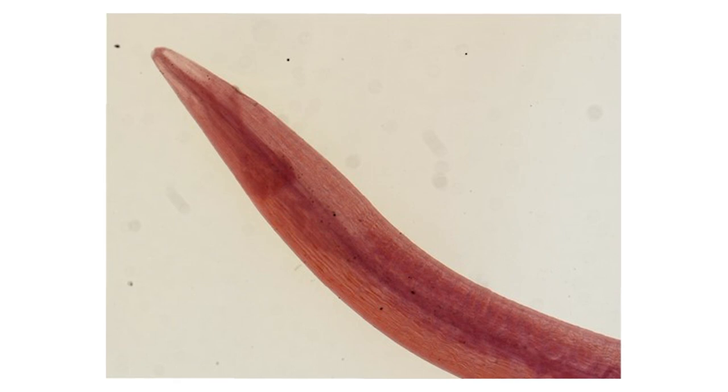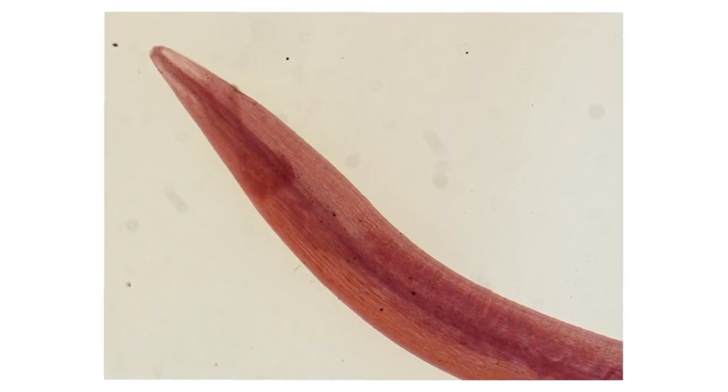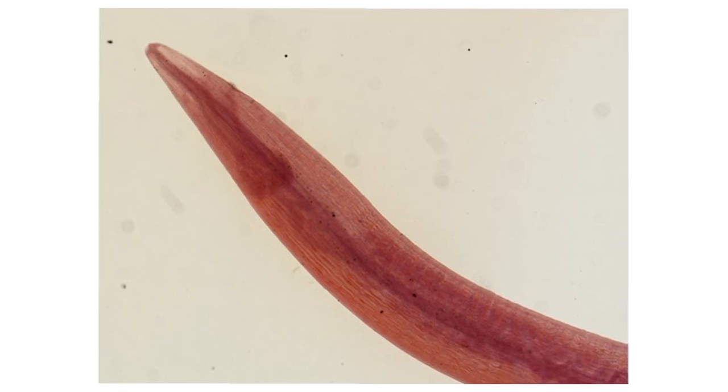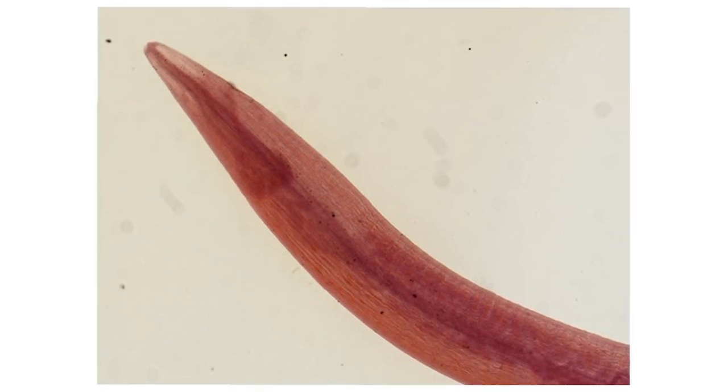Caecal worms, Heterarchus gallinarium or small ascarids. These are tiny worms that live in the caeca, the blind-ended gut. They often carry another parasite called Histomonas meleagridis, which can cause blackhead disease.